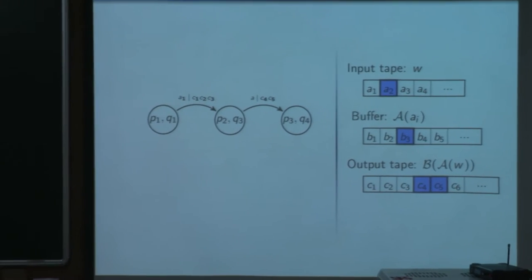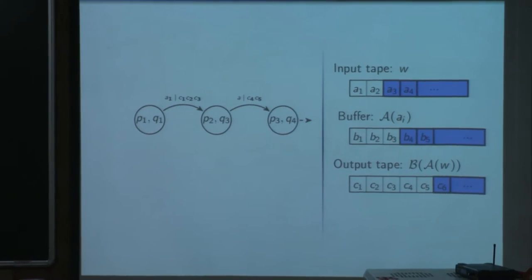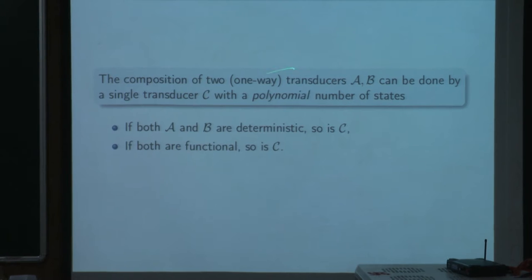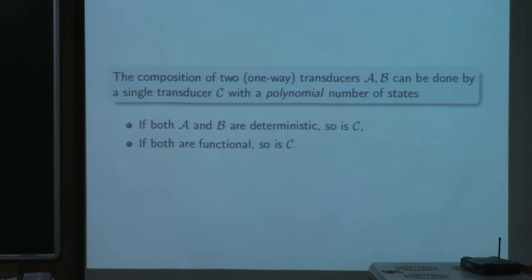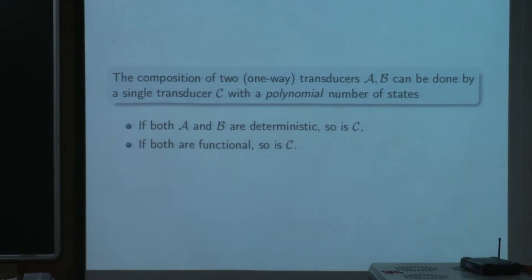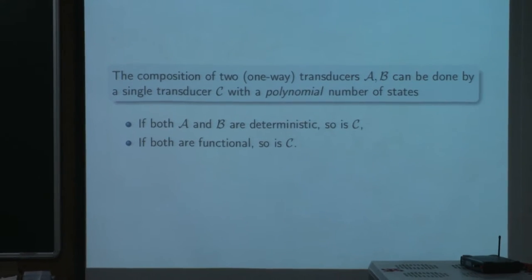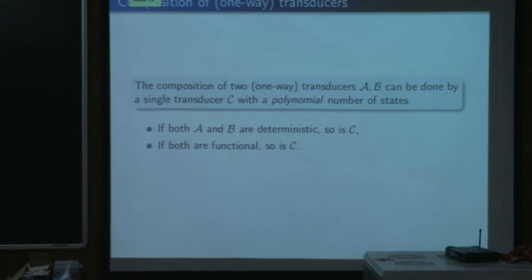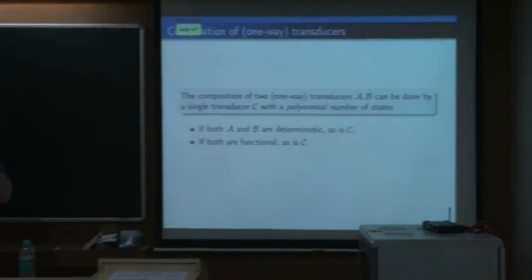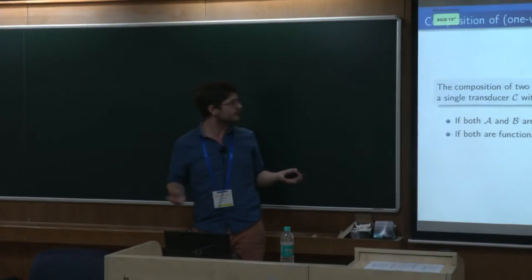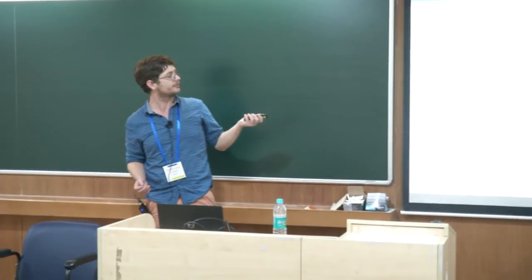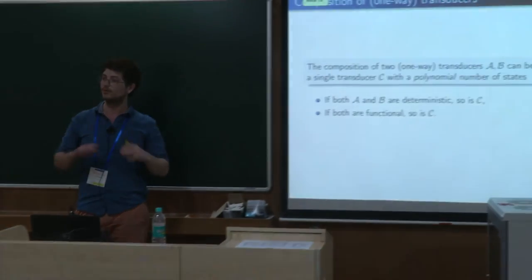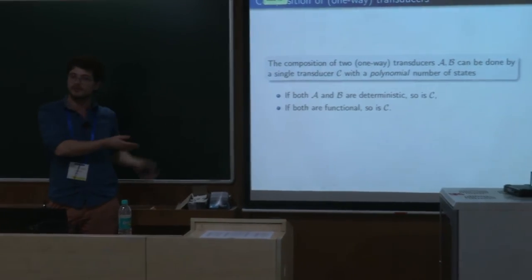You can do the composition — I say one-way because I will be talking about more expressive models. You can do it with a single transducer with a polynomial number of states, linear in both machines. It's a very strong and robust construction: it preserves determinacy and functionality. Everything works really well and it's rather simple.